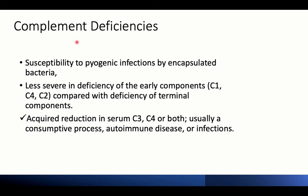Complement deficiencies occur when there is deficiency in one or multiple complement proteins, leading to susceptibility to pyogenic infections by encapsulated bacteria, similar to antibody deficiency. The presentation is less severe when the deficiency involves early components C1, C2, and C4, but more severe if there is deficiency of terminal components including C3, the common pathway, or the membrane attack complex.